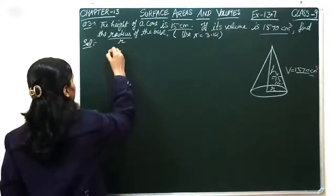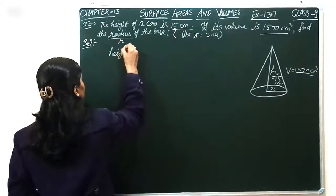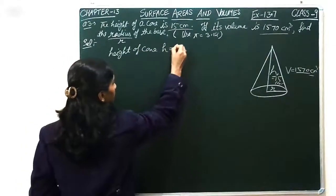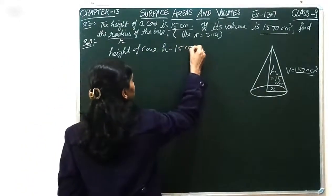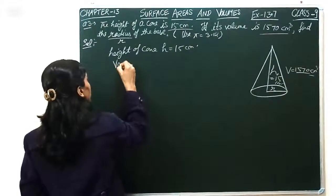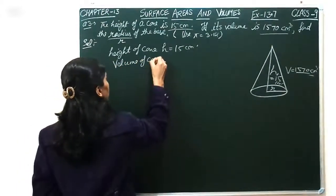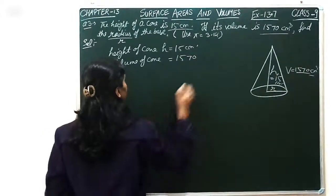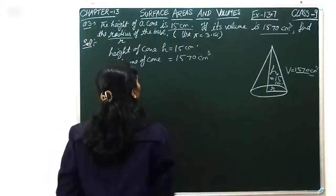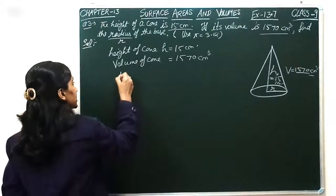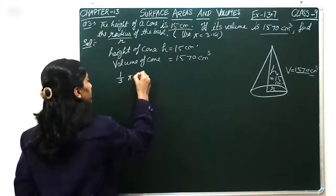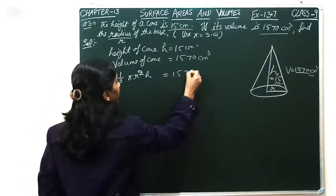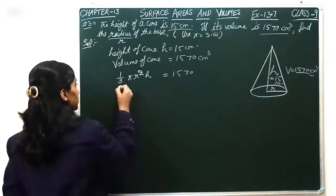What can we do here? Height of cone is 15 cm. Volume of cone is equal to 1570 cm³. And now, we know that the formula is 1 by 3 pi r square h.